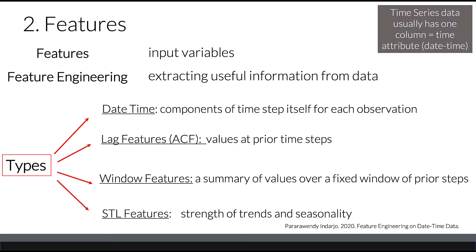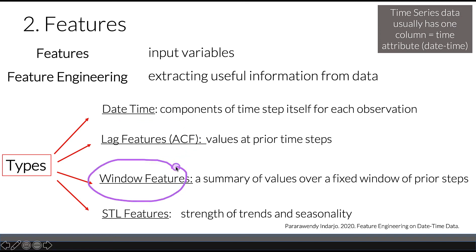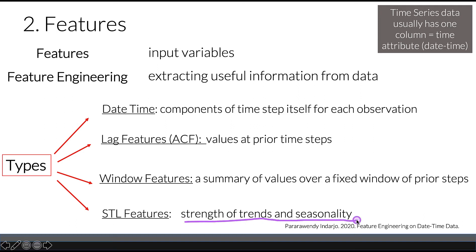In traditional time series, we don't really have input and output features, but we must choose variables to predict and variables that will become our features. There are several types of feature engineering we can implement: date-time components, lag features — values at prior time steps — window features — summary of values over a fixed window — and finally STL features, where we measure the strength of trends or seasonality.